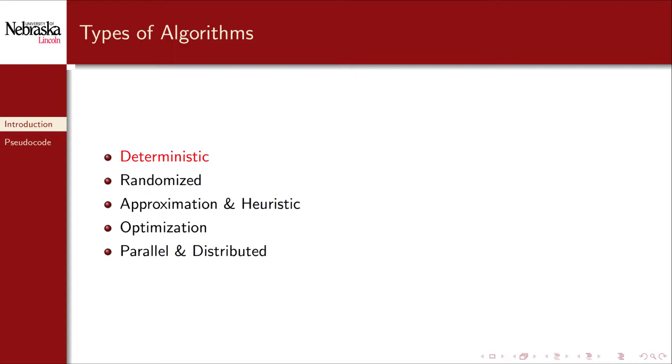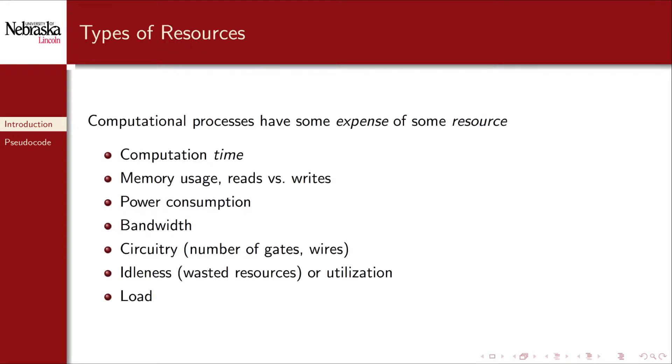For our purposes we'll focus on deterministic algorithms which are the most common most likely that you're going to see. When we run algorithms they may require or expend certain resources. From an engineering perspective a computer system has a lot of different types of resources. The most obvious resource is time which can be measured in actual execution time measured in milliseconds microseconds etc or you can measure it in terms of CPU cycles or steps or instructions which may vary depending on the speed of your processor. Other resources may include how much memory is required by the algorithm to compute its result.